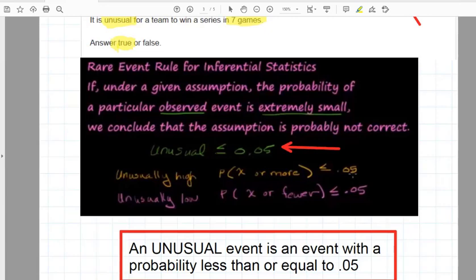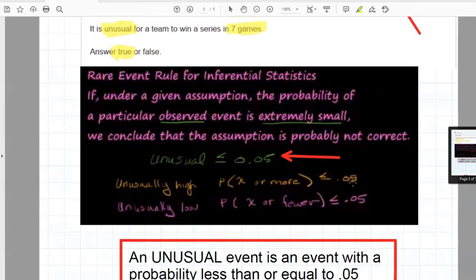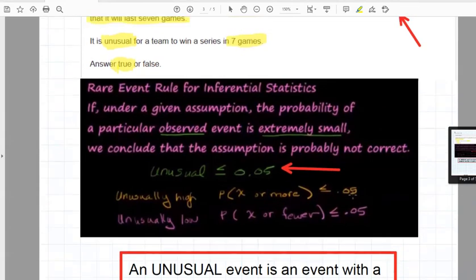The rare event rule is that unusual events, and follow this big red arrow in the middle of the screen here, rare events or unusual events are events where the probability is less than or equal to 5%. So if the event has a likelihood of 5% or less, or 0.05 or less,